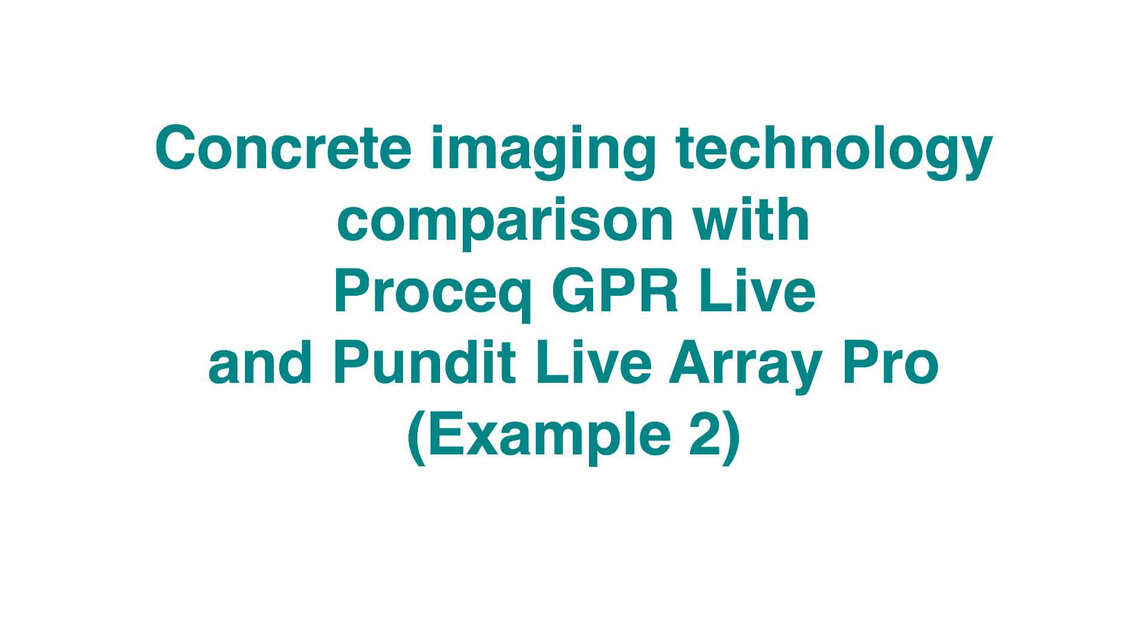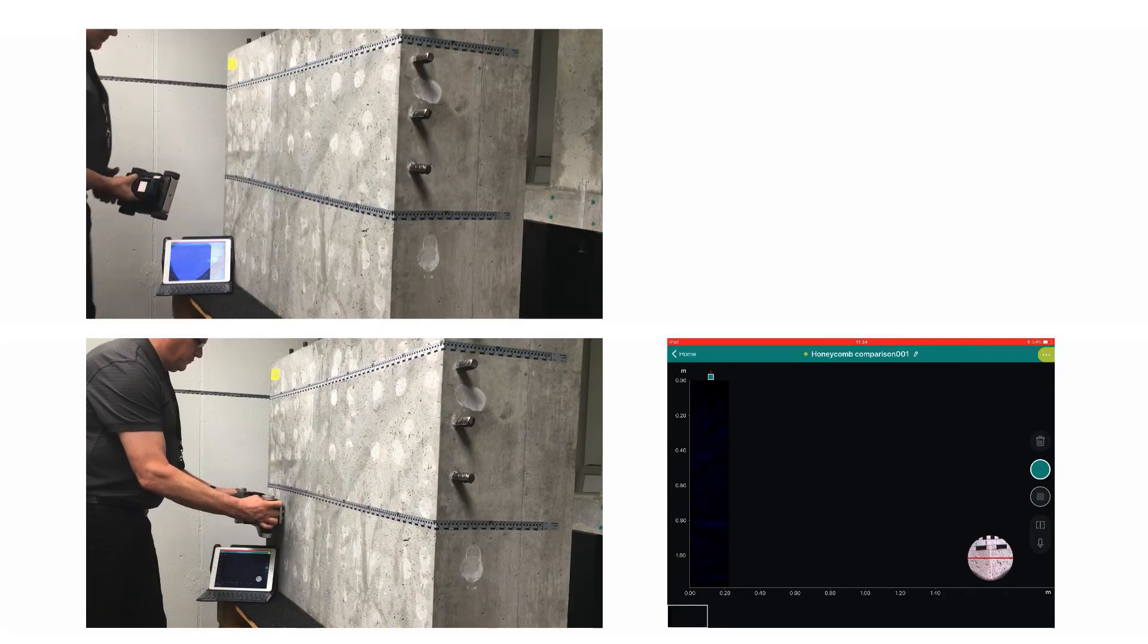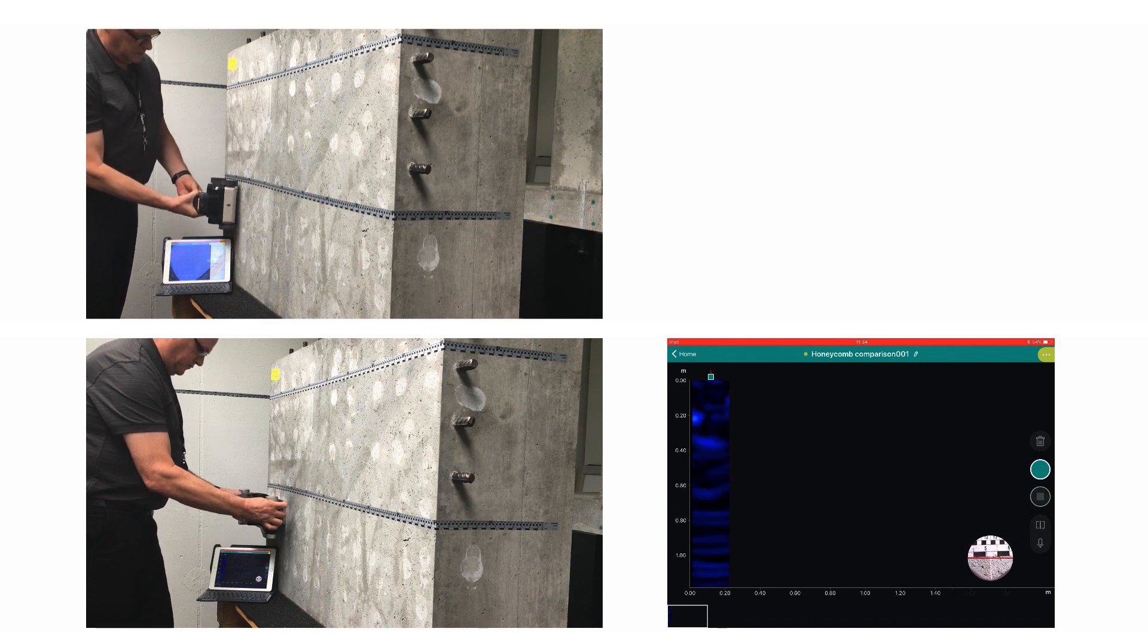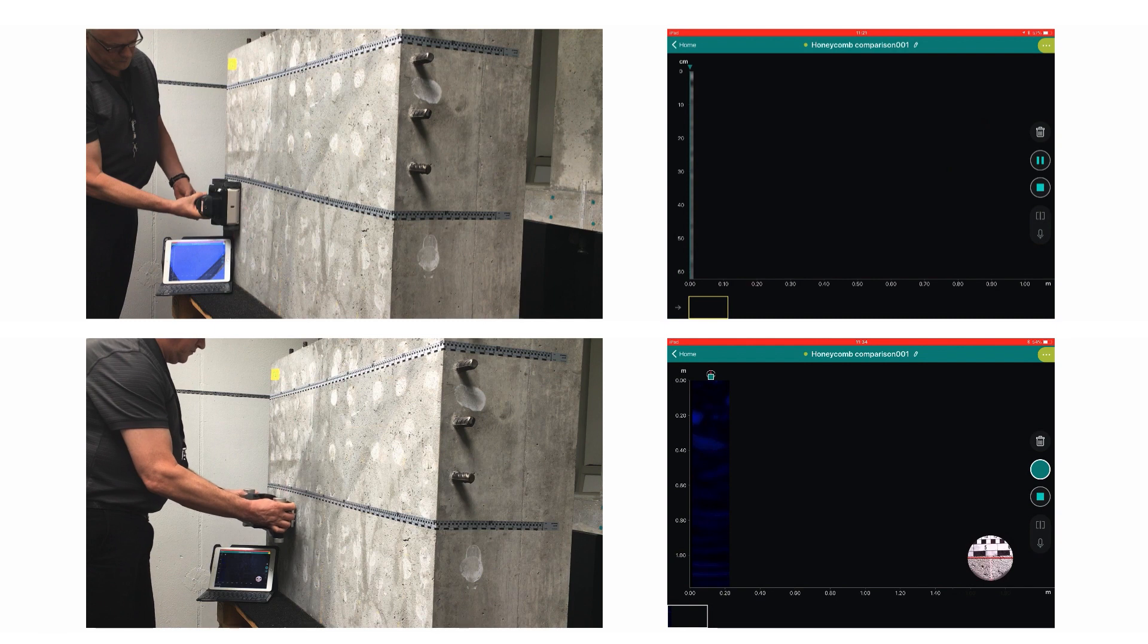This video compares the application of GPR and Pulse Echo technology. The test block we're going to use has reinforcement only in the upper half. We begin by performing scans in the lower half of the test block where there is no reinforcement.